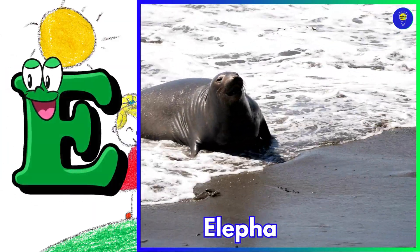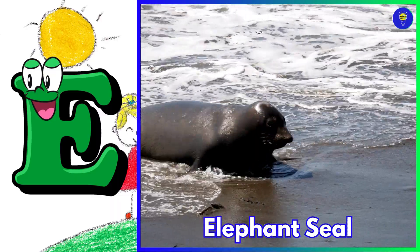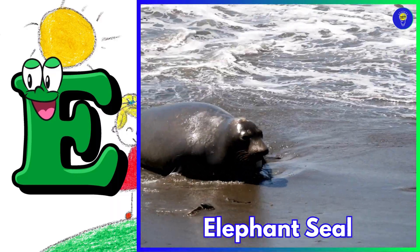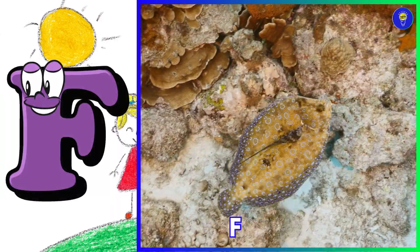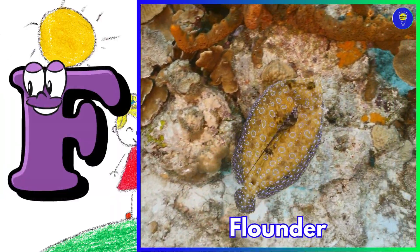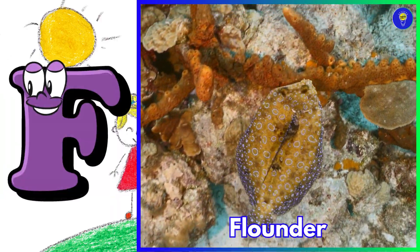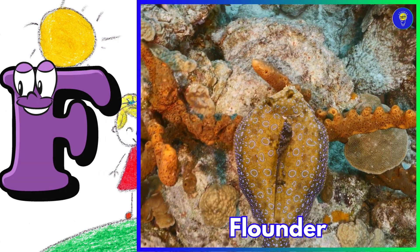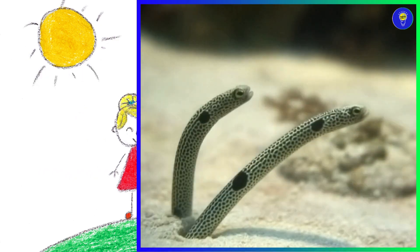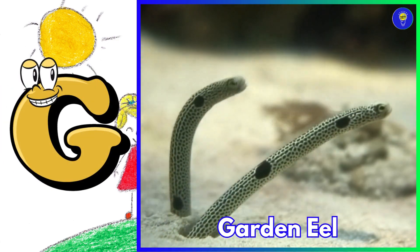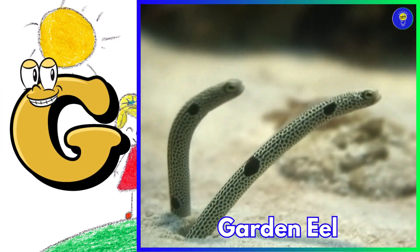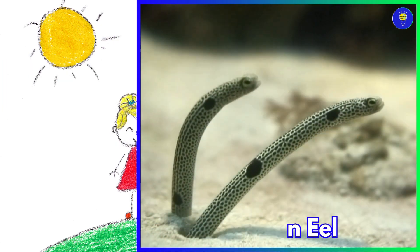E is for elephant seal. F is for flounder. G is for garden eel.